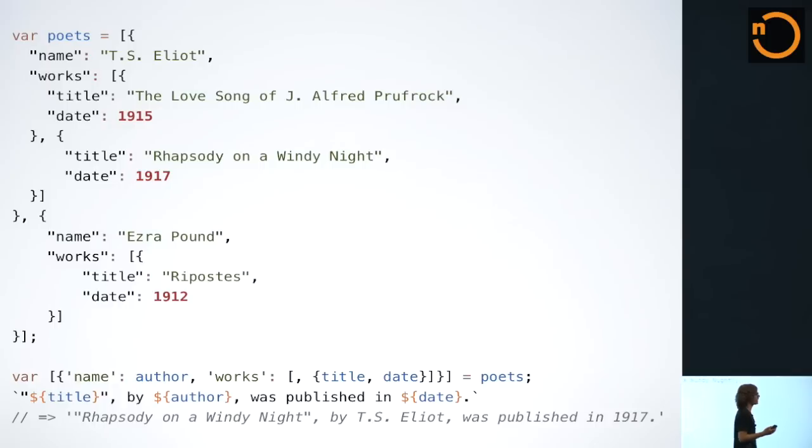Let's look at a more complex example, destructuring an entire object of information. Let's say that you get this data back from your server. It comes down the wire as JSON. You deserialize it, and then you want to print out information about T.S. Eliot's poem, Rhapsody on a Windy Night. In this case, T.S. Eliot is the first element in our Poets array. The second one is Ezra Pound. We don't care about him for now. Rhapsody on a Windy Night is the second element of Eliot's work.